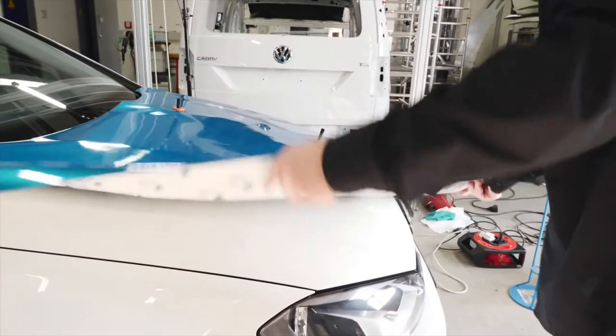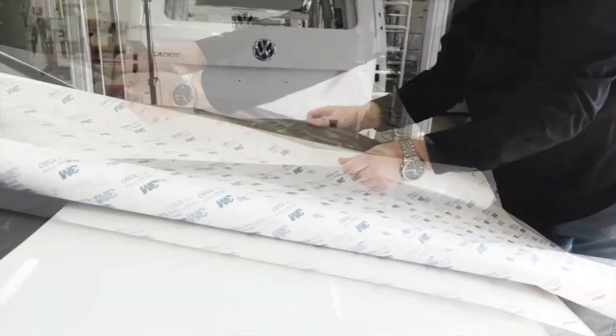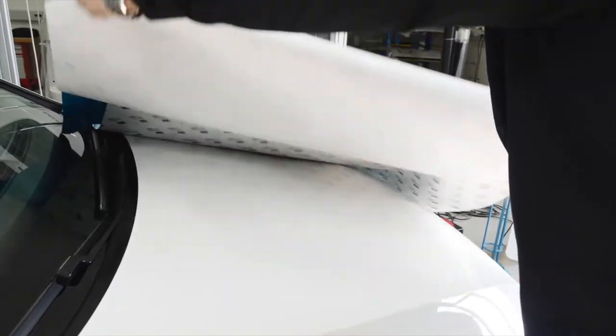Position the film on the bonnet and secure it with magnets. Flip over the material and separate the liner from the film by folding it under. This later allows you to remove the entire liner in one smooth action.